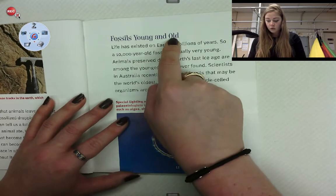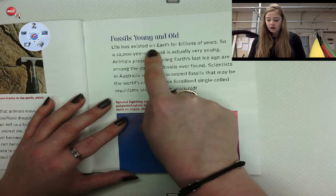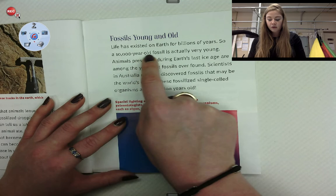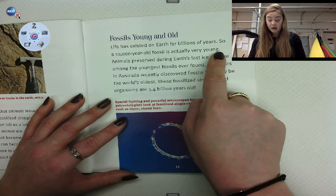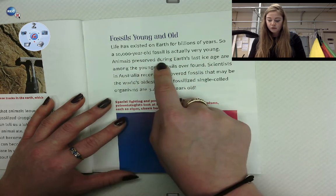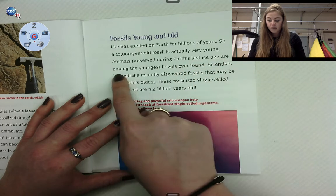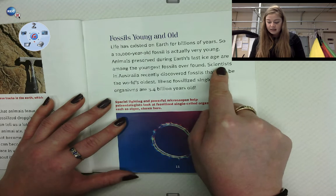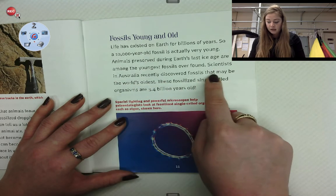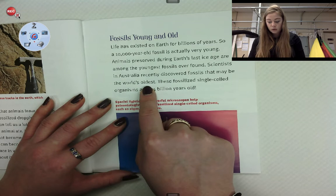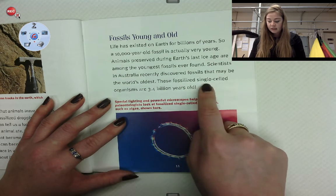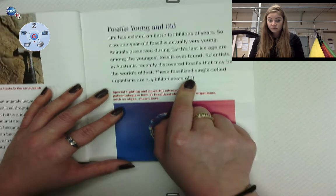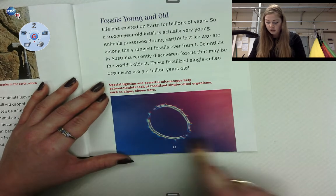Fossils, young and old. Life has existed on Earth for billions of years, so a 10,000-year-old fossil is actually very young. Animals preserved during Earth's last ice age are among the youngest fossils ever found. Scientists in Australia recently discovered fossils that may be the world's oldest.